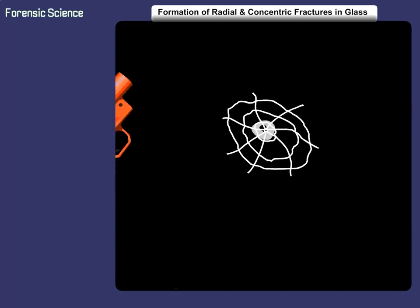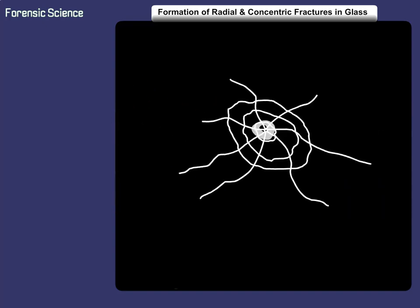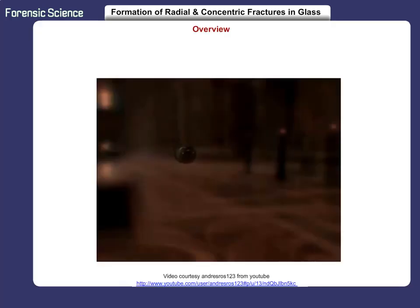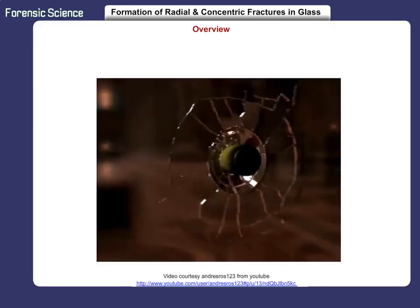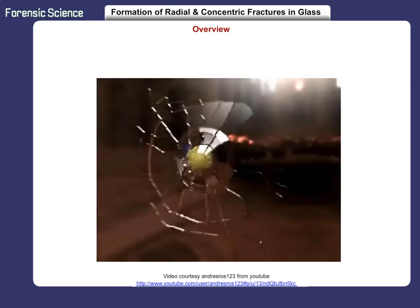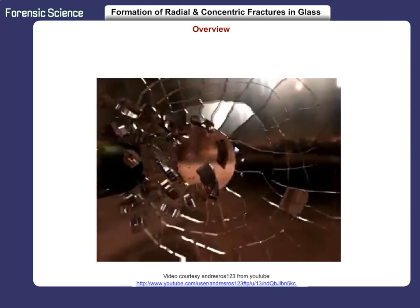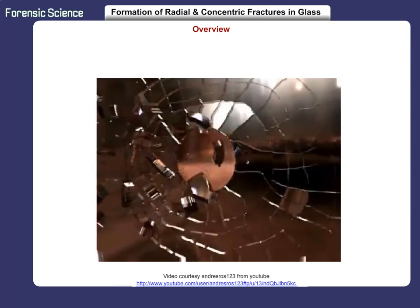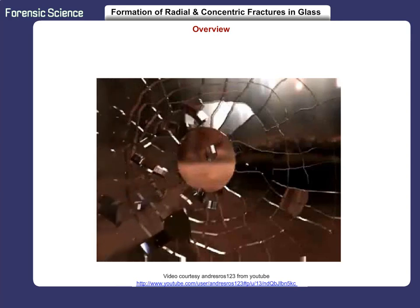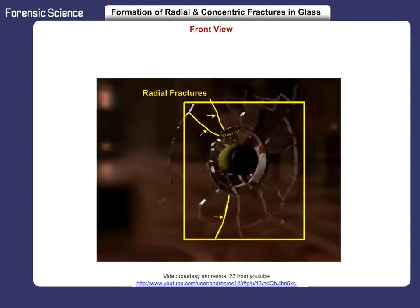Formation of radial and concentric fractures in glass. Watch this bullet as it impacts the surface of a glass pane. In slow motion, the force against the glass forms radial fractures first and then concentric fractures.